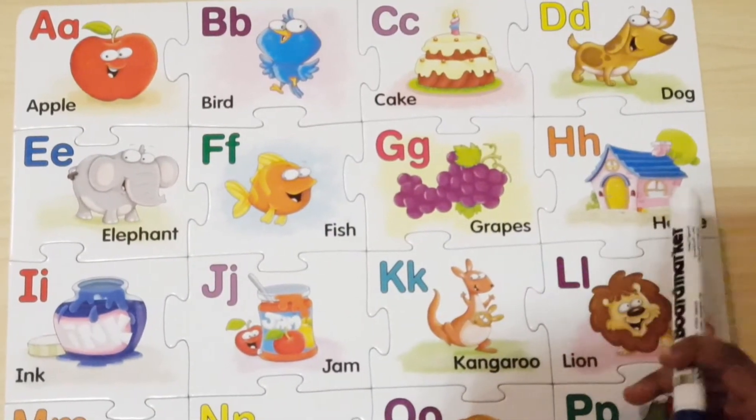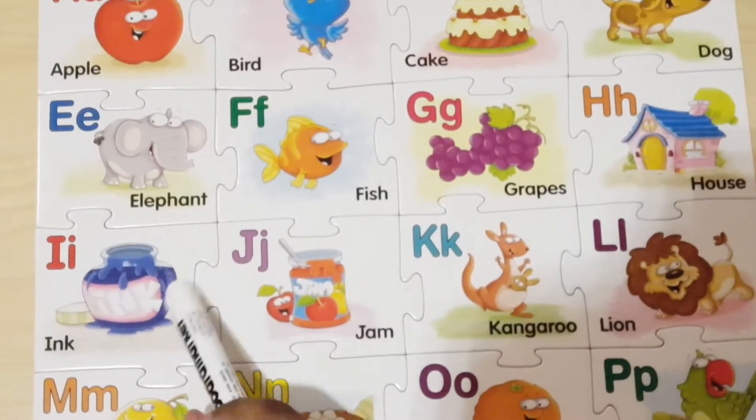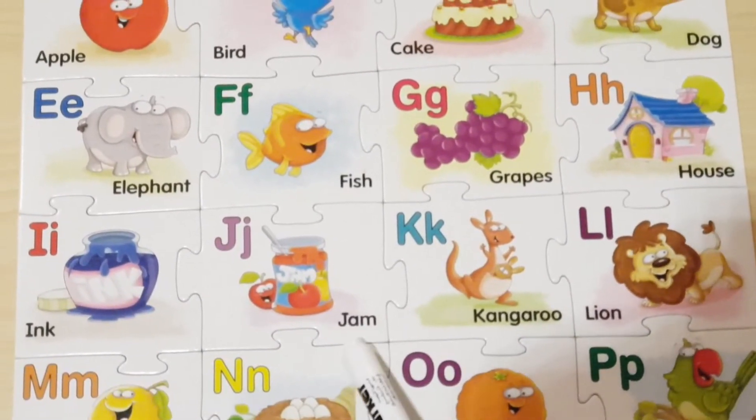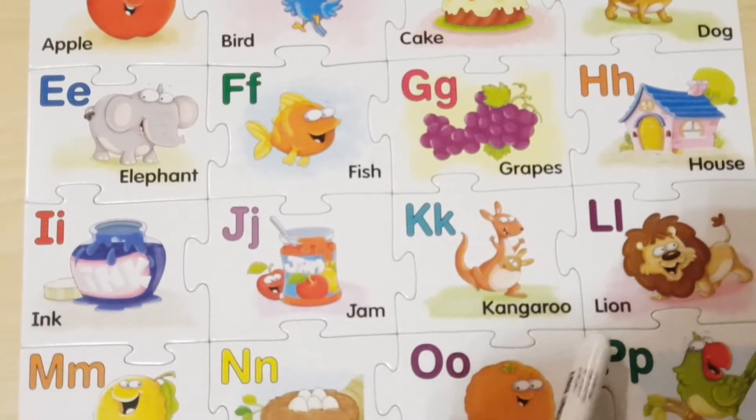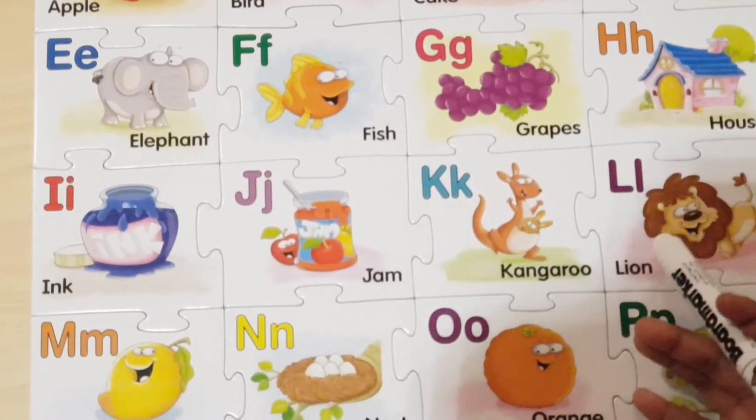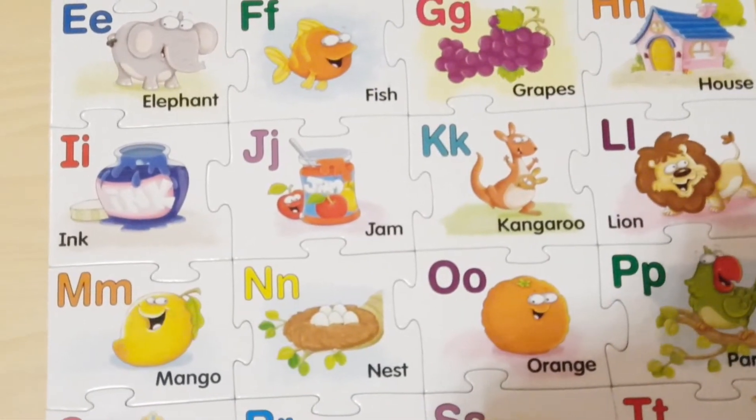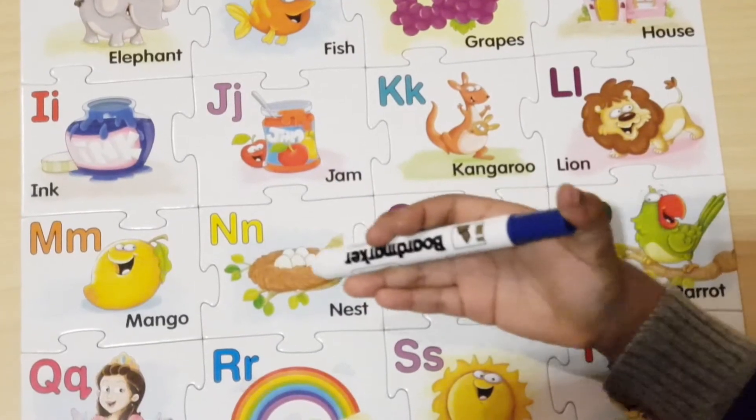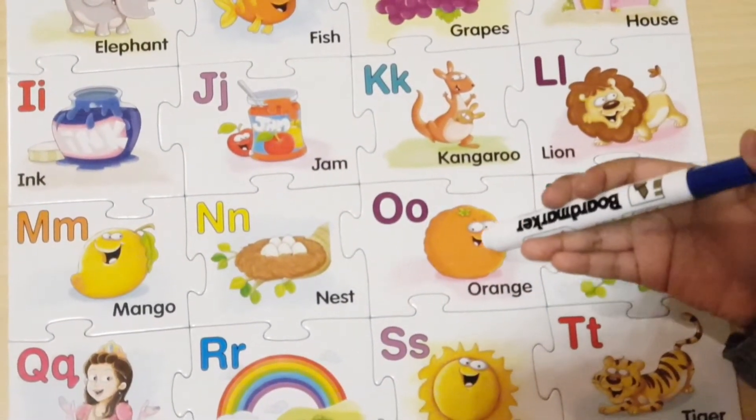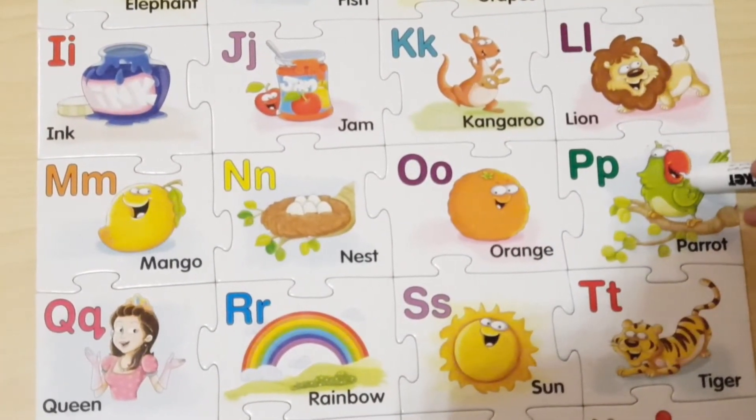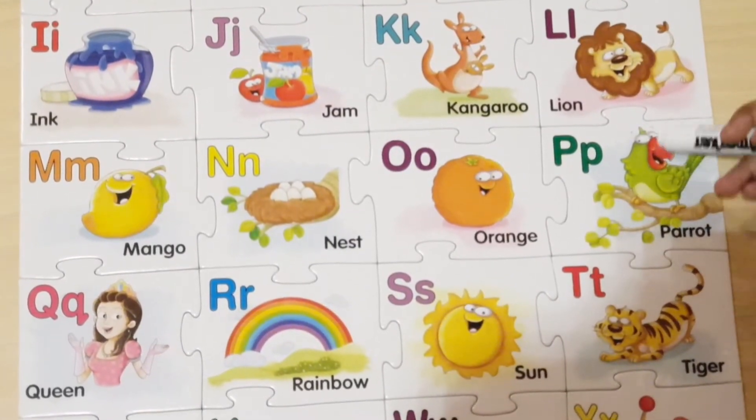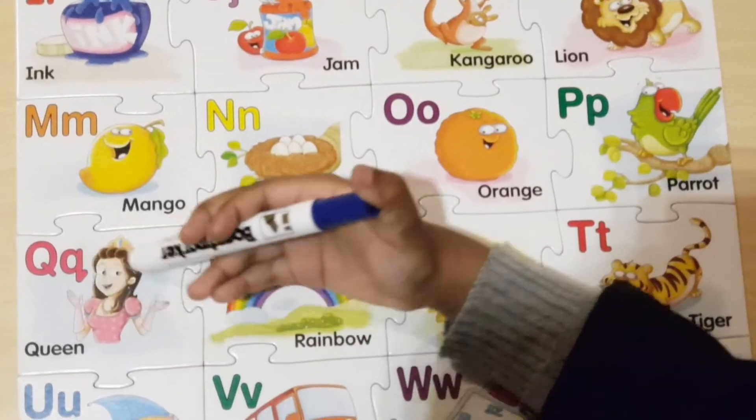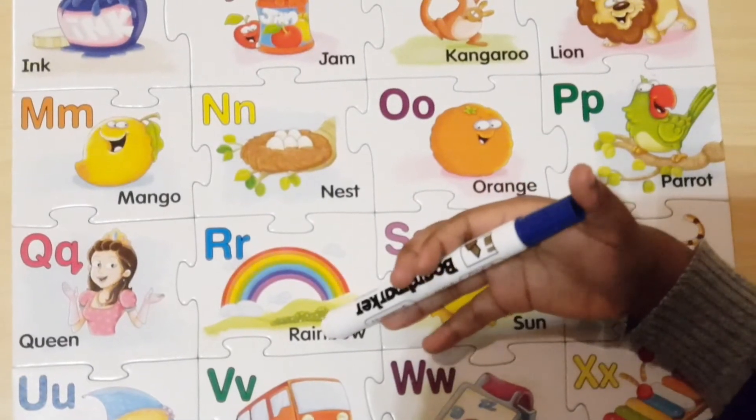G sounds G as in Grapes. H sounds H as in House. I sounds I as in Ink. J sounds J as in Jam. K sounds K as in Kangaroo. L sounds L as in Lion. M sounds M as in Mango. N sounds N as in Nest. O sounds O as in Orange. P sounds P as in Parrot.